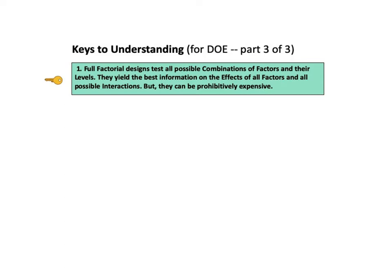Now let's go forward with Design of Experiments Part 3 of 3. As usual in the book and in these videos, we'll start by going quickly through a list of keys to understanding, which will end with the overall picture of the concept on a single page. Then we'll go into detailed explanation of each of the keys. For this video, there are six keys.